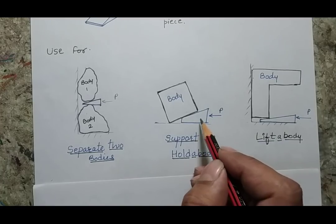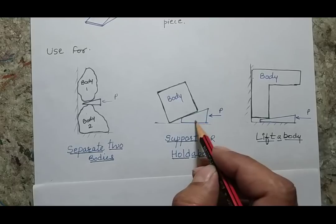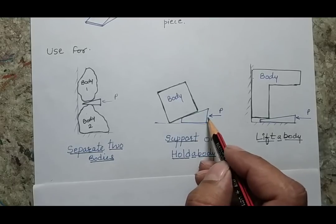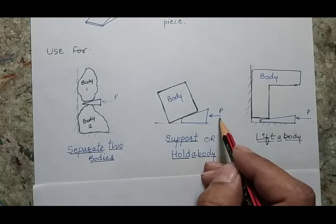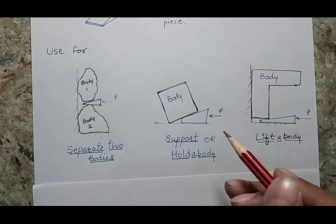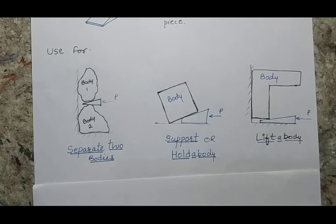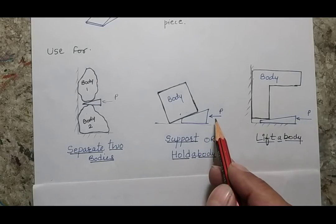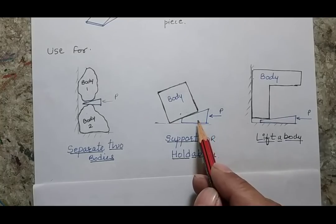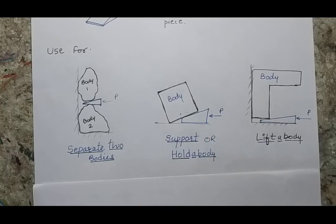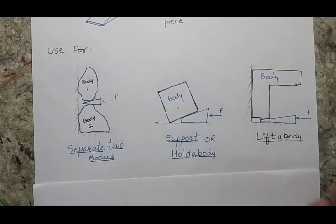To keep the wedge in this position, there may be two conditions. One condition is that I have to continuously apply a force P, or if the friction is such that the wedge can remain in this position, no additional force is needed. We only insert the wedge and it will hold or support the body.